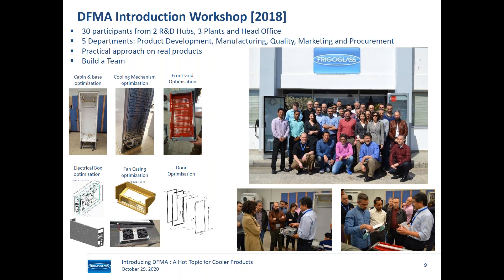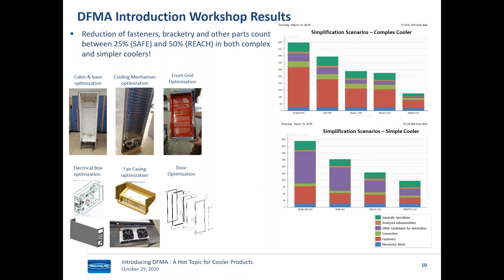It took about two days for the teams to produce results that surprised even themselves. They were able to reduce fasteners, bracketry, and other parts by between 25 and 50 percent — both in complex and simpler products — and that was just to convince the teams of what was easily possible.